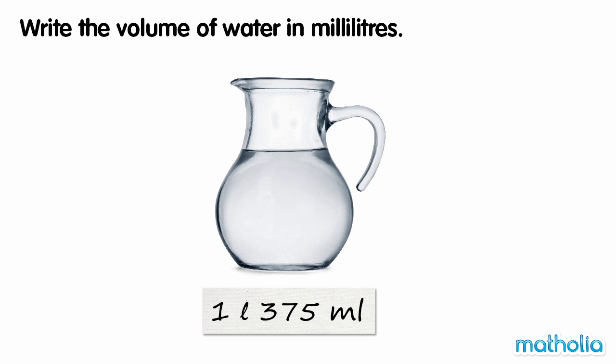Write the volume of water in millilitres. The jug contains 1 litre, 375 millilitres of water.